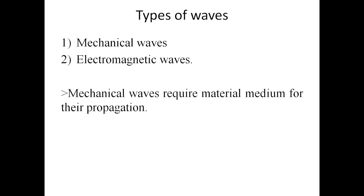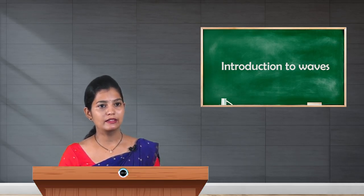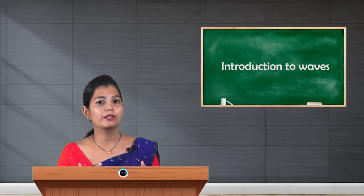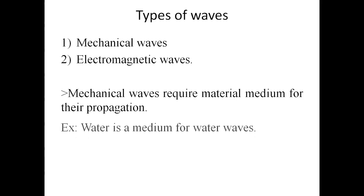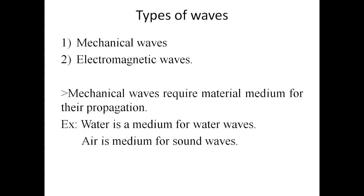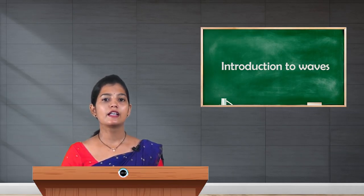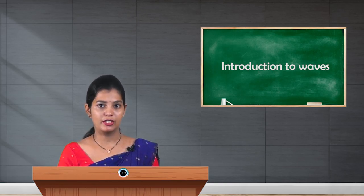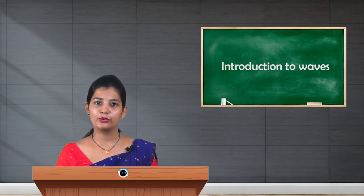Mechanical waves always require a material medium for their propagation — this means mechanical waves cannot propagate through vacuum. For example, water is a medium for water waves, and air is a medium for sound waves. This is the reason why we can't hear sound in vacuum, because sound always requires a material medium for its propagation.